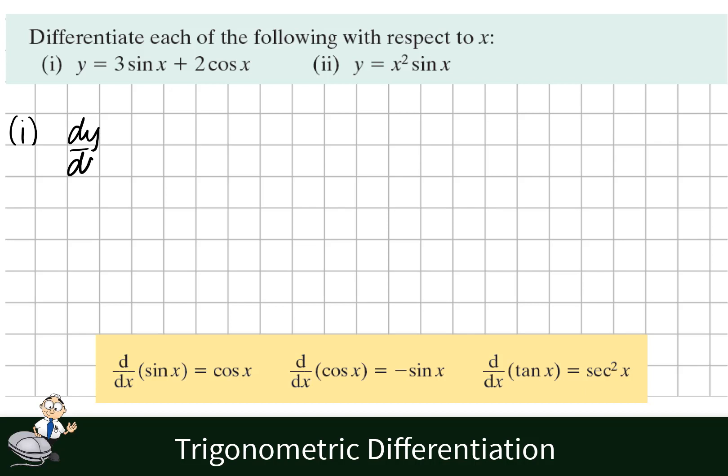In the first example, 3 sin x becomes 3 cos x, since sin x goes to cos x when we differentiate it. And 2 cos x goes to 2 times negative sin x.